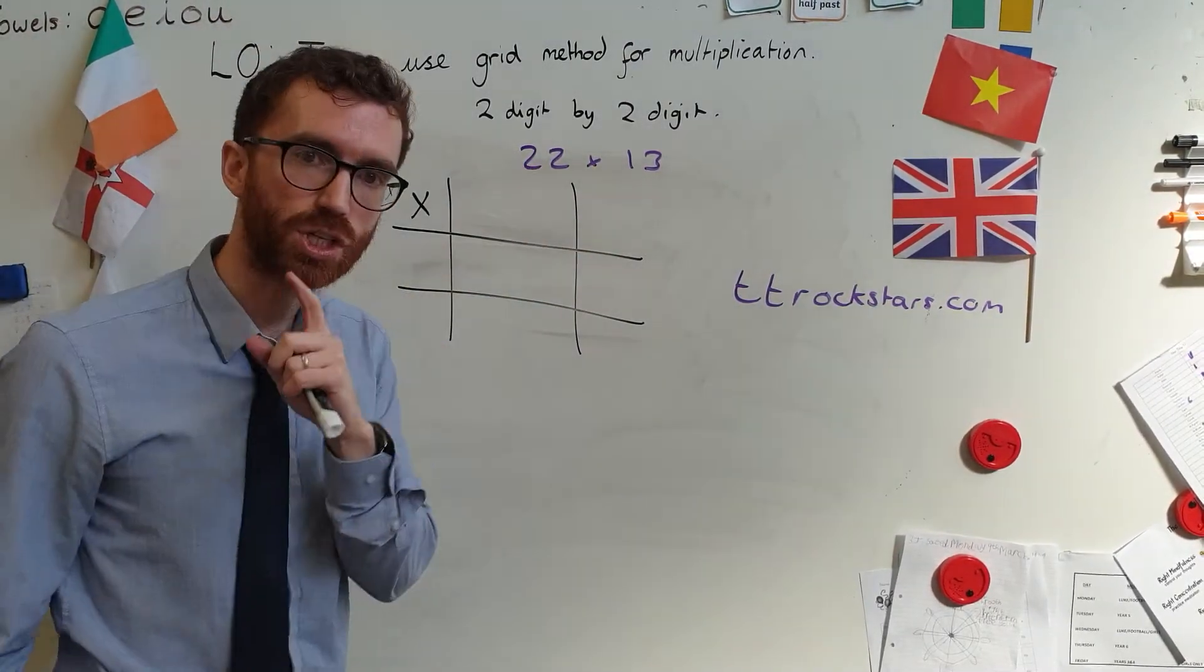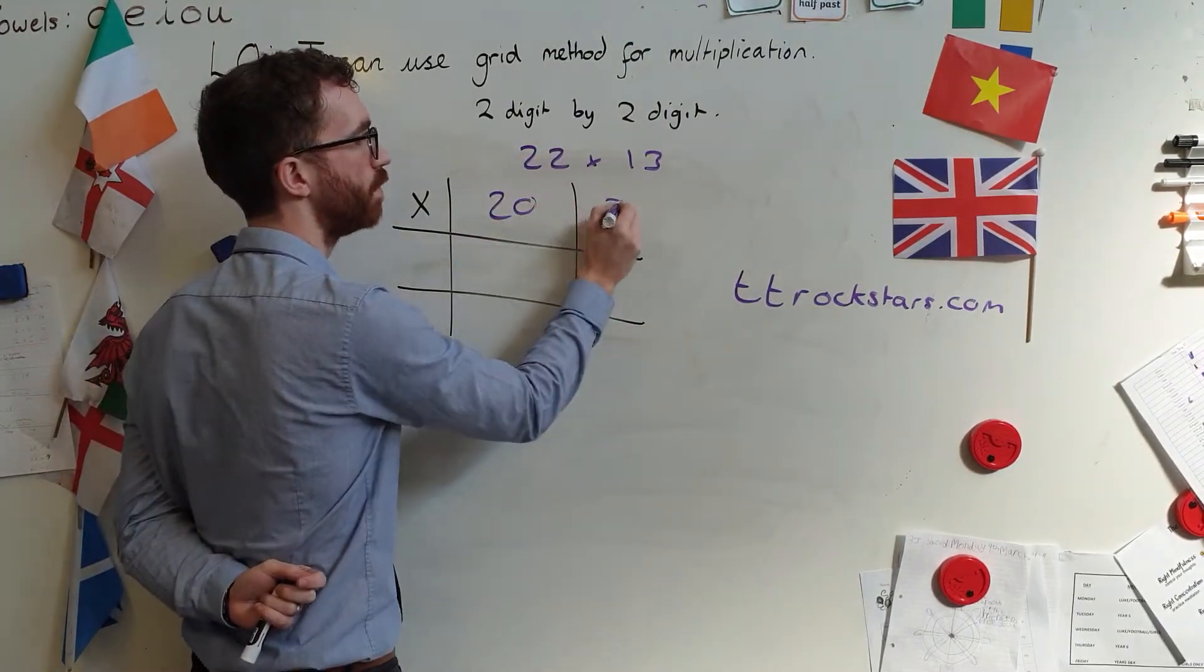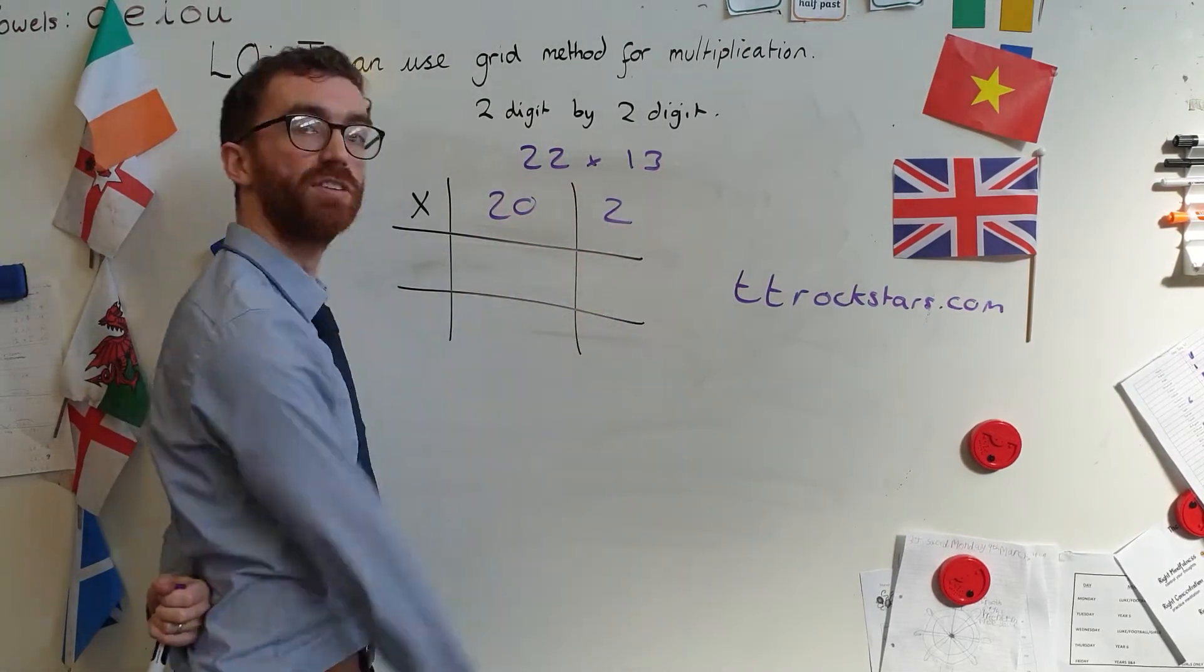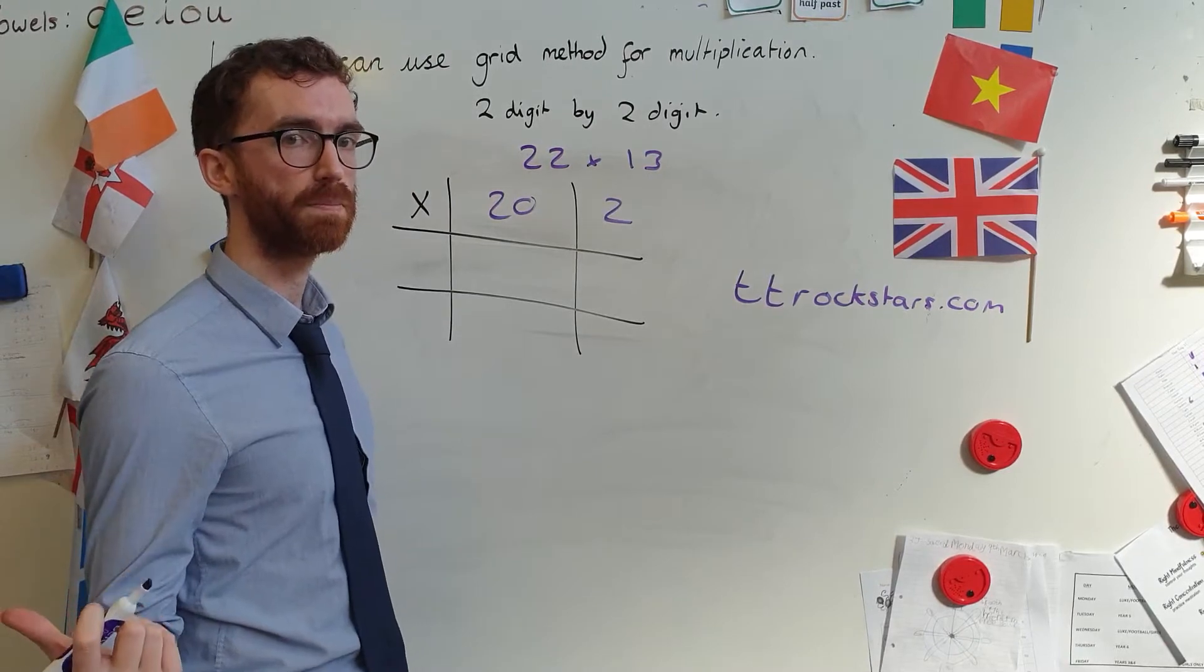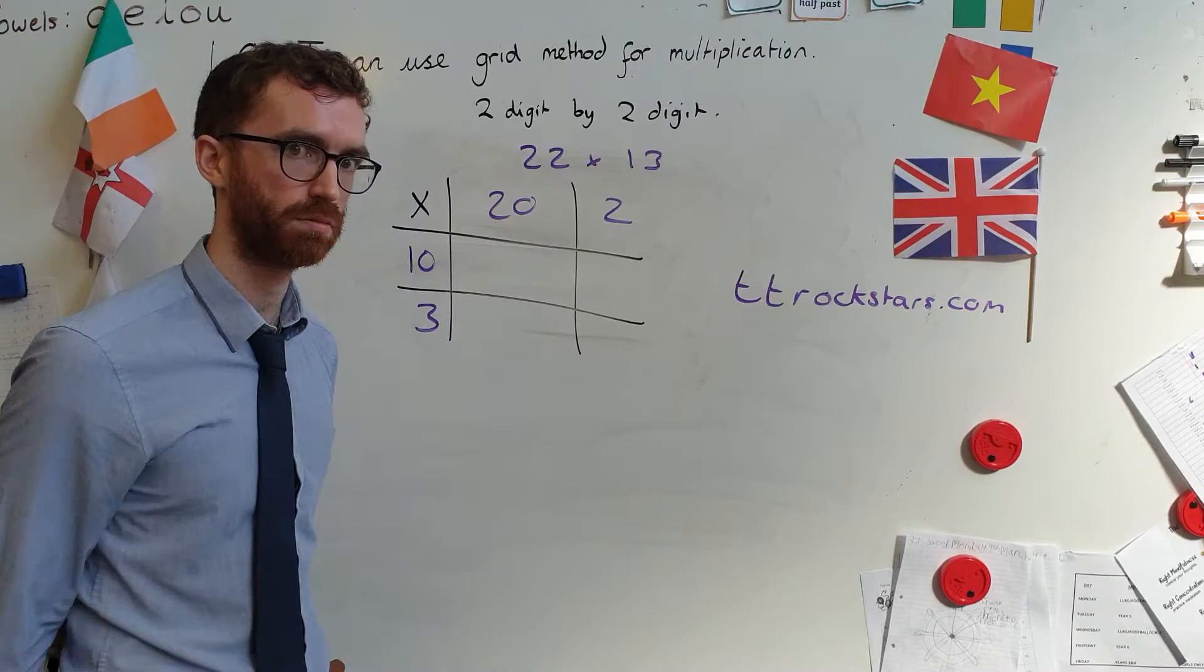So, I need to partition. Let's partition that first number. 20 and 2, because it's made of two 10s and two 1s. 20 and 2. Let's partition this second number, 13. What's 13 made of? Tell your parent. That's right. 10 and 3.